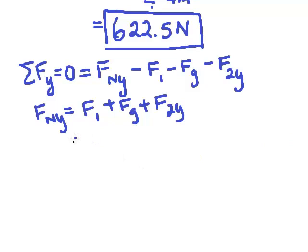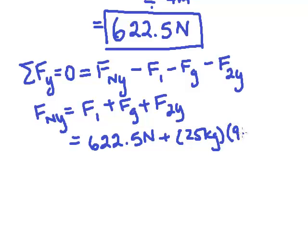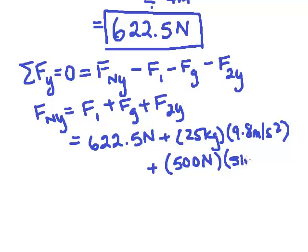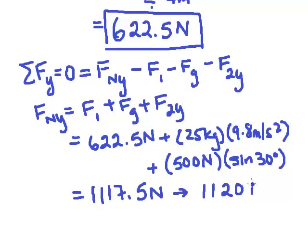We can plug in numbers there, and F1 we just found is 622.5 Newtons plus 25 kilograms times 9.81 meters per second squared plus F2y is 500 Newtons times sine of 30 degrees. When we plug this in, we get 1117.5 Newtons, or when we round that off, we'll get 1120 Newtons.